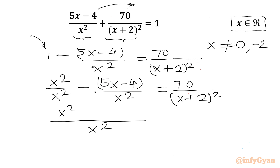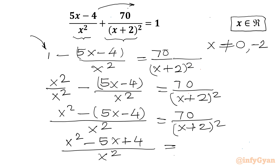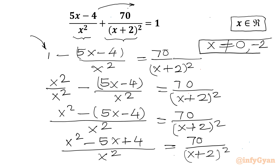Now the numerator becomes x² - 5x - 4, and the RHS is unchanged: 70/(x + 2)². Expanding gives (x² - 5x + 4)/x² = 70/(x + 2)². Since x ≠ 0 and x ≠ -2, we can cross multiply to get (x² - 5x + 4)(x + 2)² = 70x².